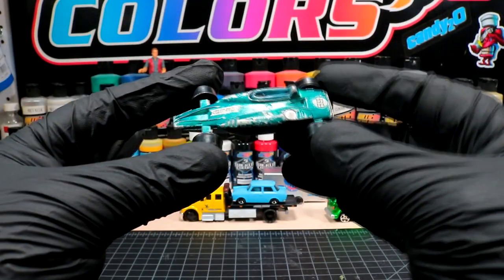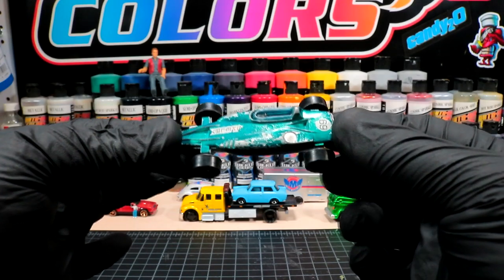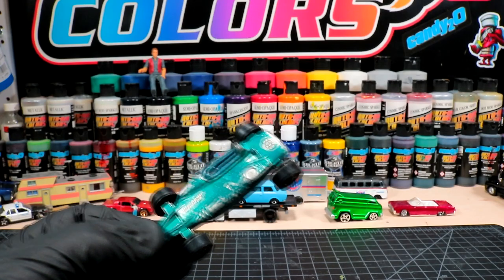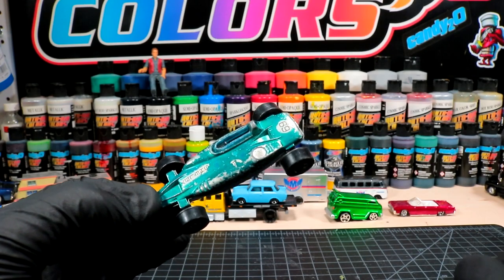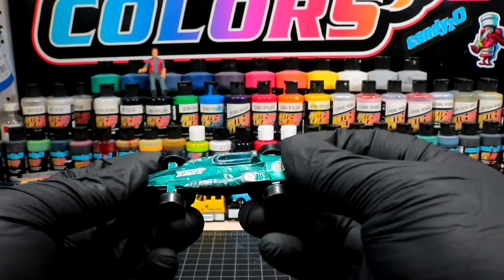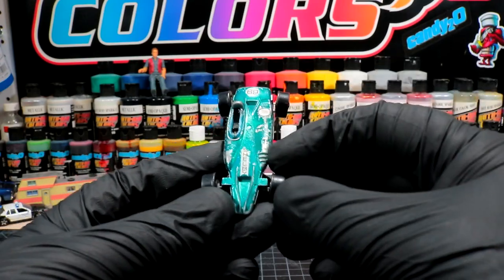Welcome back to Diecast Resurrection. Today we are working on a little red line Shelby Turbine. And yes, that was a Rey Mysterio semi truck and trailer, beautiful right? These cars are pretty cool.